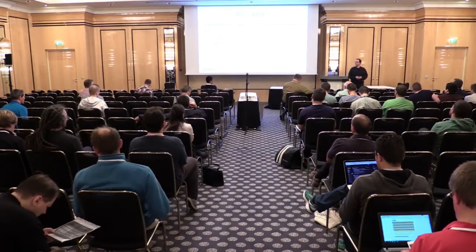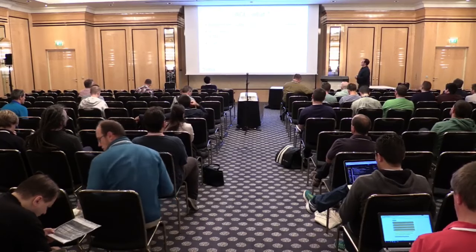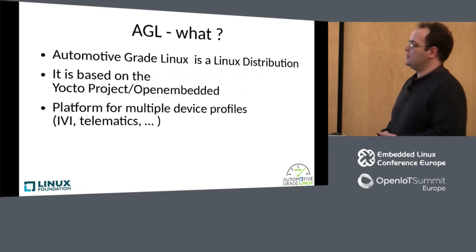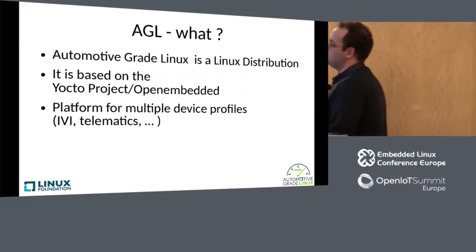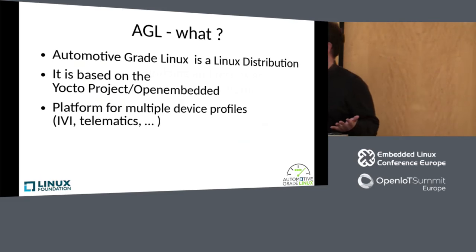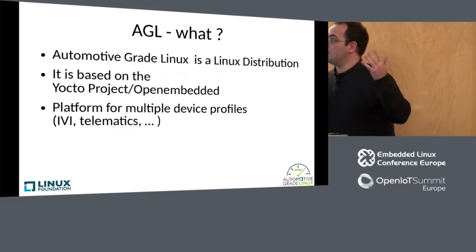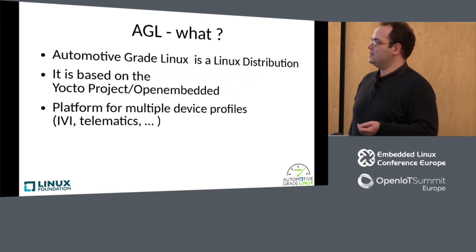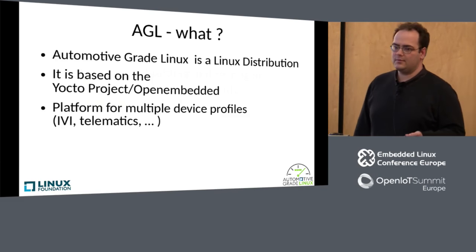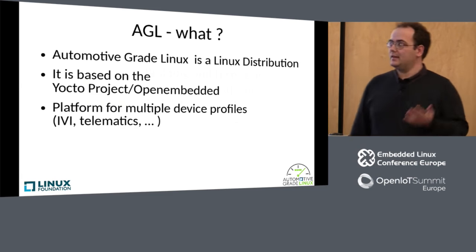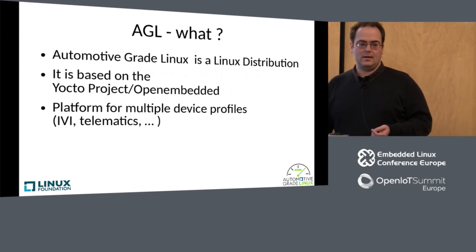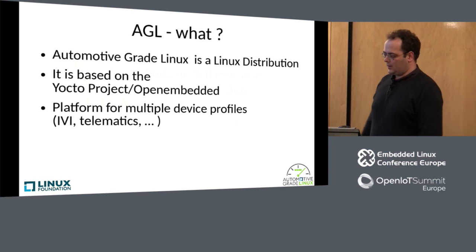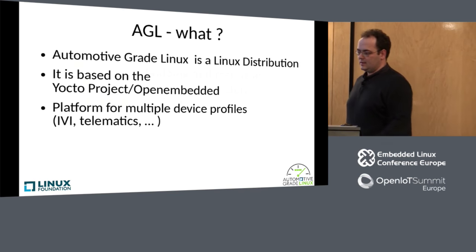What's AGL? In principle, it's a Linux distribution for Automotive. We use the Yocto project and OpenEmbedded, and we create a platform which can be used for multiple device profiles — IVI right now, Telematics in the queue — so a platform for Linux in Automotive.